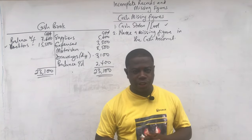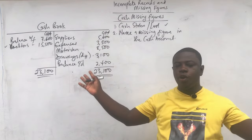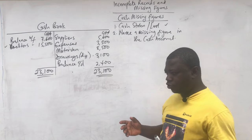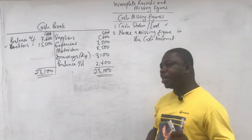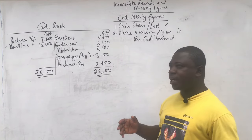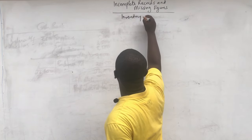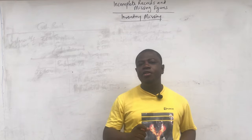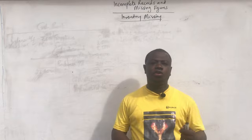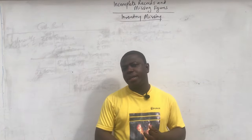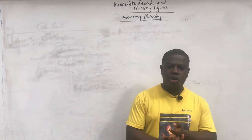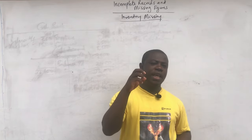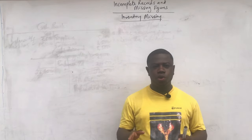We are done with the missing figures relating to cash. I'm going to take a practical question on a whole single entry system involving these things after this lesson. We are now going to move to the inventory or stock side, which is more technical. So pay attention to the inventory section, which is more complex than the cash.